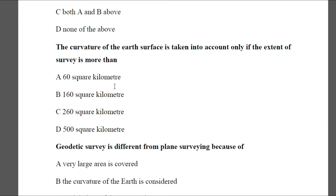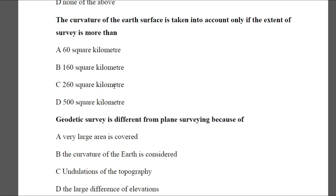Question 2: The curvature of the earth is taken into account only if the extent of survey is more than — A: 60 km², B: 160 km², C: 260 km², D: 500 km². The answer is C — 260 km².